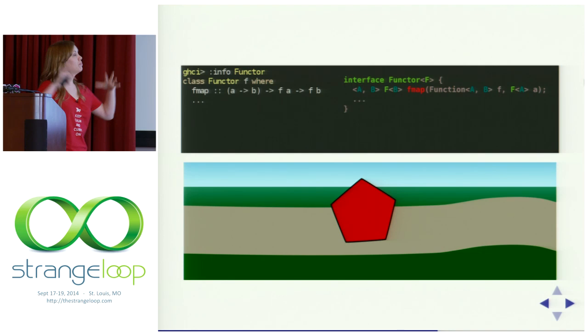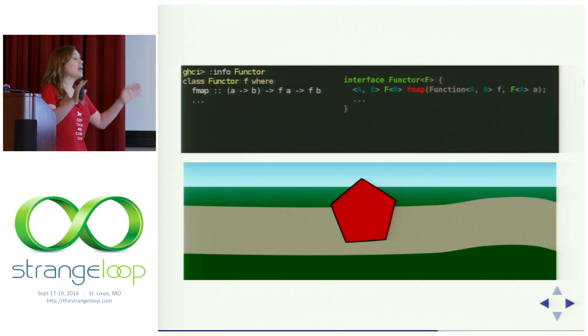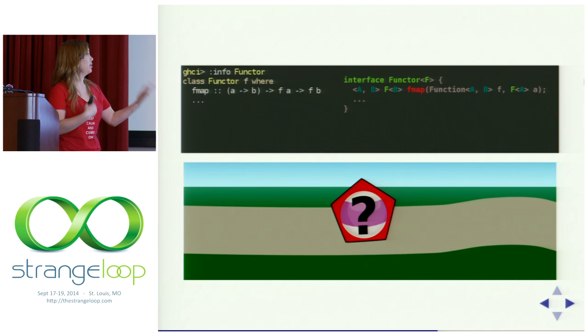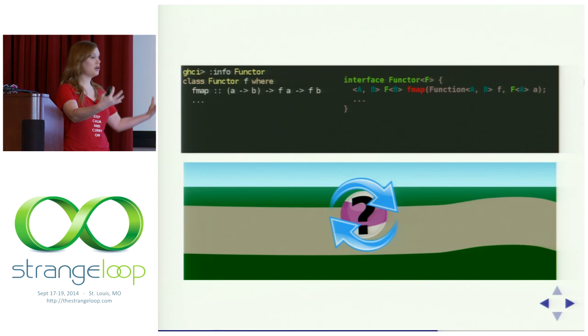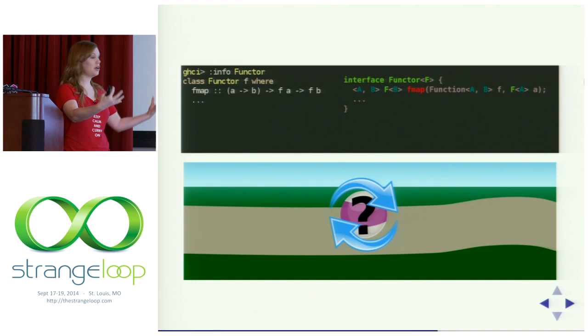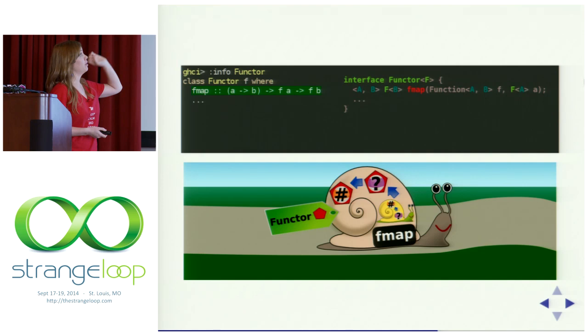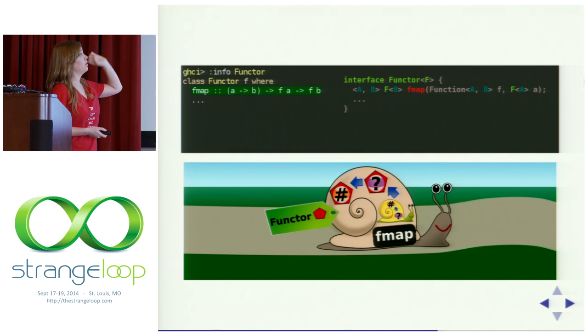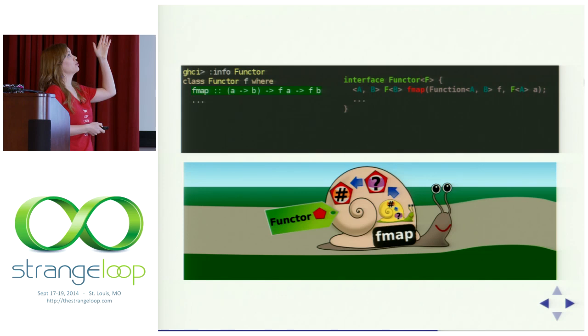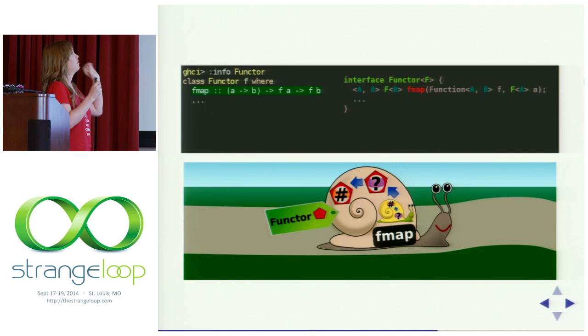Pictorially: imagine a container or structure that itself contains values of whatever type. That structure could be a list, an IO action that returns some other type, a tree — lots of things fit this pattern. We also need whatever fits that pattern to have an fmap function: a function that takes a function from some A to some B, and one of these container types containing A's, and gives us the same kind of container type containing B's. This is just like the map signature, but with f instead of a specific list type.